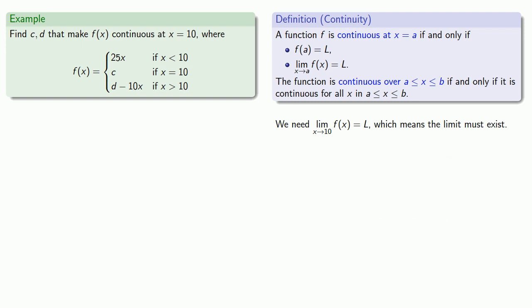The limit as x approaches 10 from below of f of x. Well, if x is getting close to 10 but staying less than it, that means we're going to be using our first formula 25x. And so as long as x is slightly less than 10, f of x is 25x and so our limit is going to be 250.